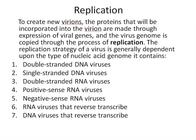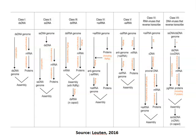Viruses may contain double-stranded DNA, single-stranded DNA, double-stranded RNA, positive-sense RNA, negative-sense RNA, and so on. On the basis of these different classes, the replication process takes place differently. For example, in class 1, double-stranded DNA through replication produces more double-stranded DNA, and through transcription produces mRNA, and through translation produces protein. That protein and genome are then assembled into a complete virion particle, and similarly for other classes of viruses.